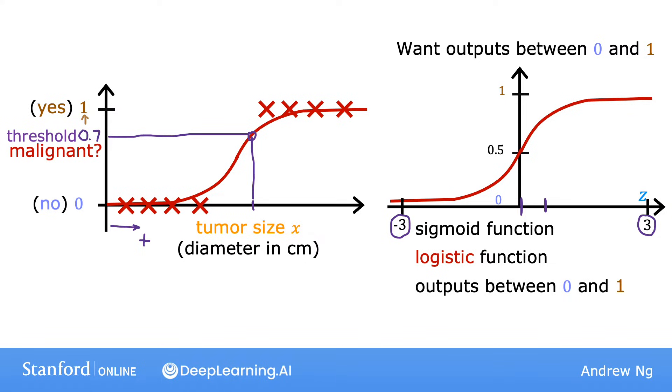So the sigmoid function outputs values between 0 and 1. And if I use g of z to denote this function, then the formula of g of z is equal to 1 over 1 plus e to the negative z, where here e is a mathematical constant that takes on a value of about 2.7, and so e to the negative z is that mathematical constant to the power of negative z.